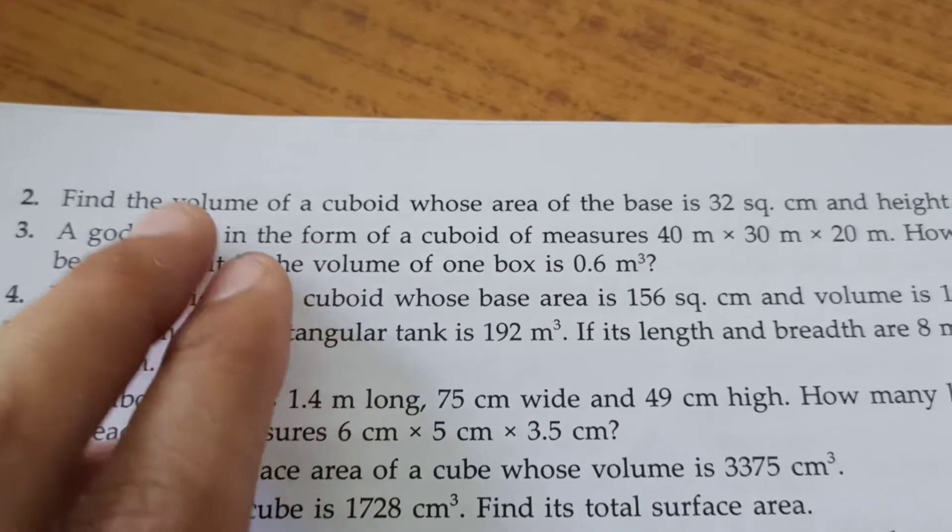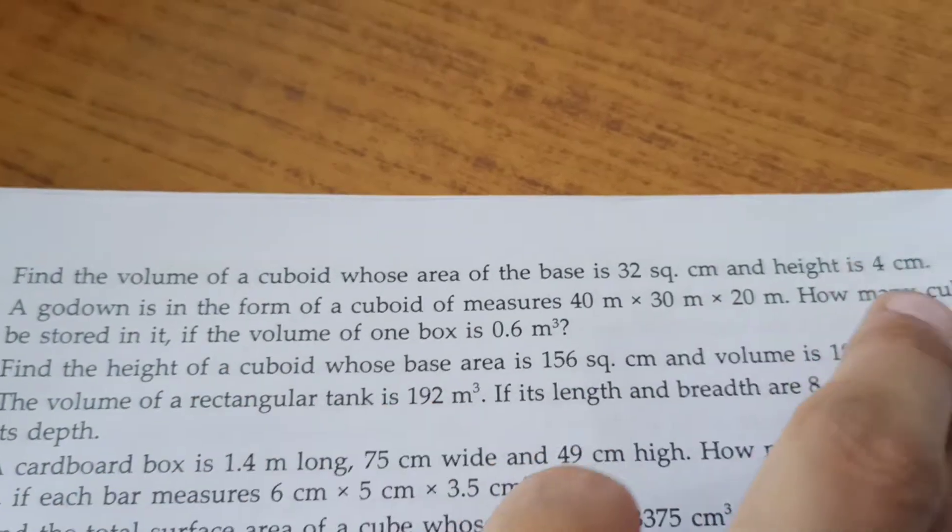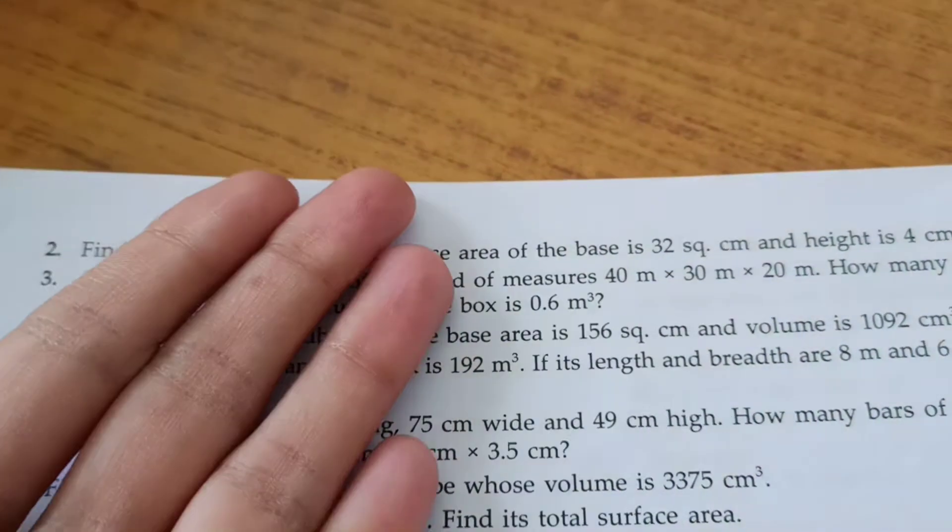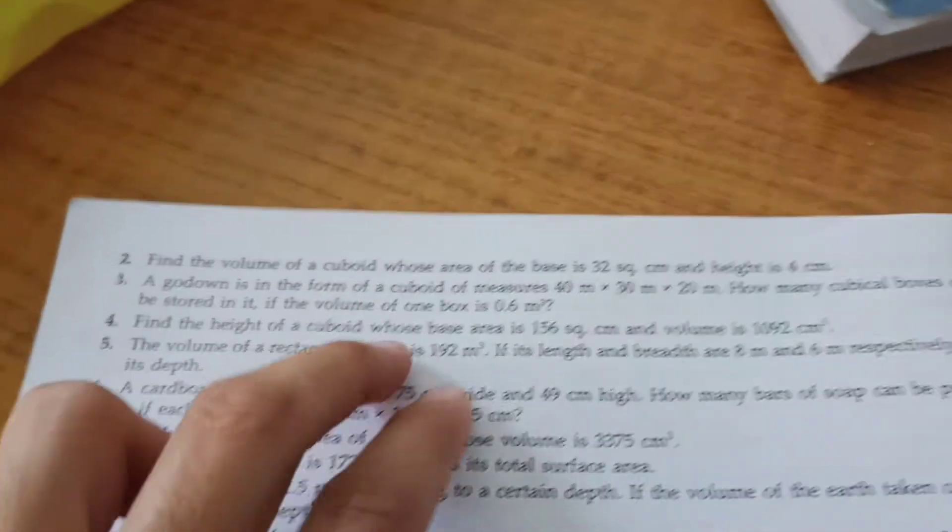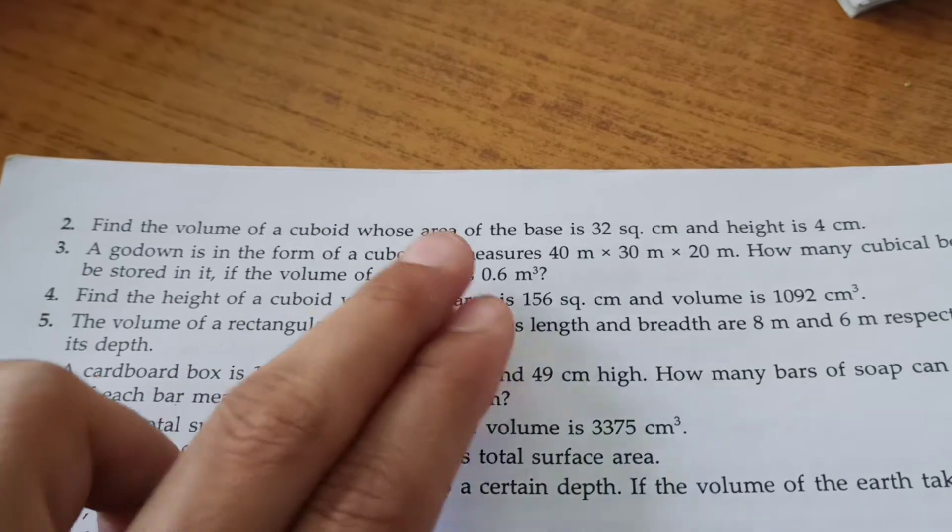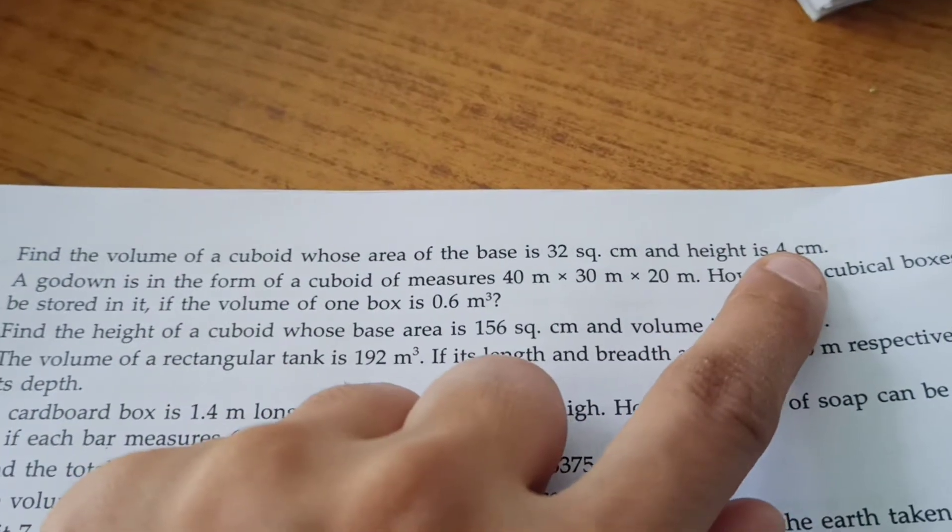Now find the volume of a cuboid whose area of base is 32 square centimeter and height is 4 centimeter. A cuboid has a rectangular base. For example, this is our cuboid - its base is a rectangle. The rectangle's area is length into breadth. So here the area length into breadth is given as 32 and height is given as 4, so length into breadth into height equals 32 into 4.